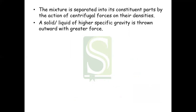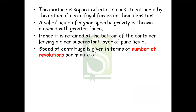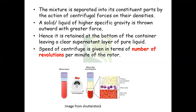A solid or liquid of higher specific gravity is thrown outward with greater force. Hence it is retained at the bottom of the container, leaving a clear supernatant layer of pure liquid. The speed of centrifugation is given in terms of number of revolutions per minute of the rotor. For example, this first test tube shows whole blood; after passing it through the centrifuge, it gets separated on the basis of the density of the particles into the separated layers.